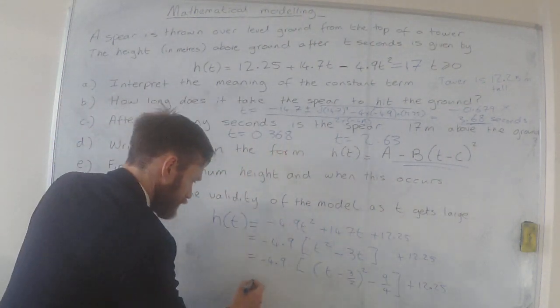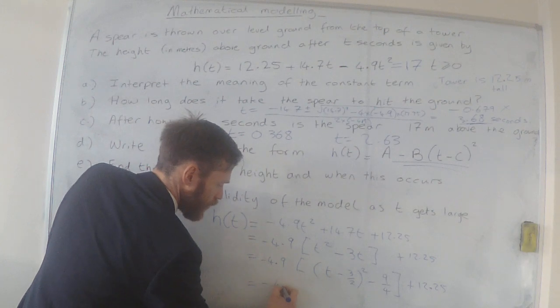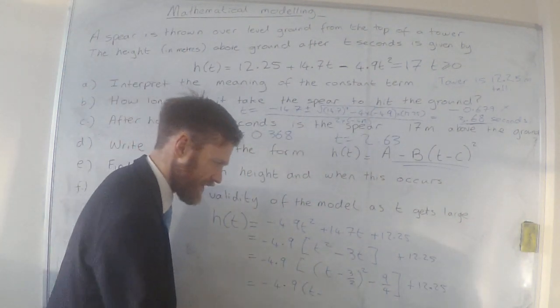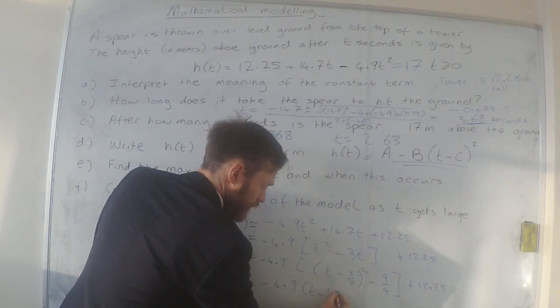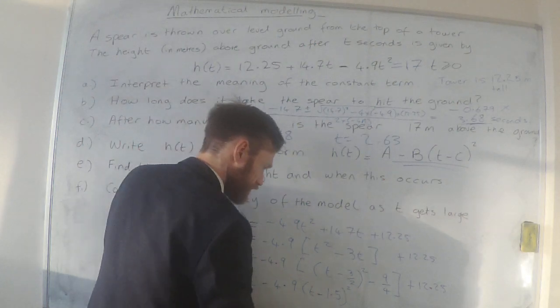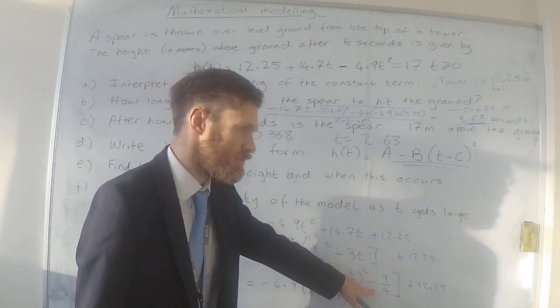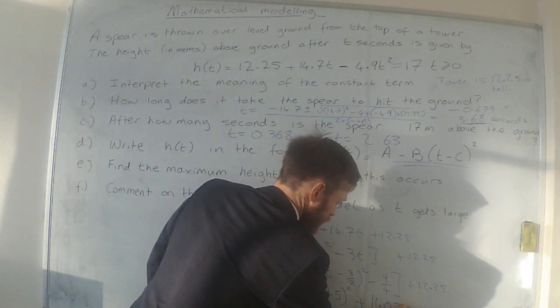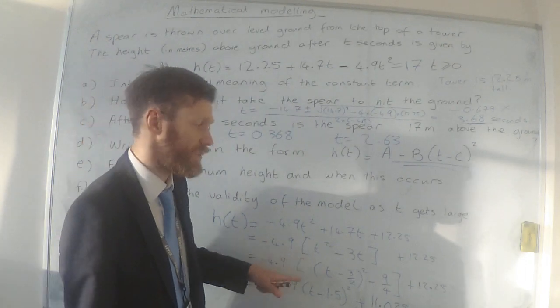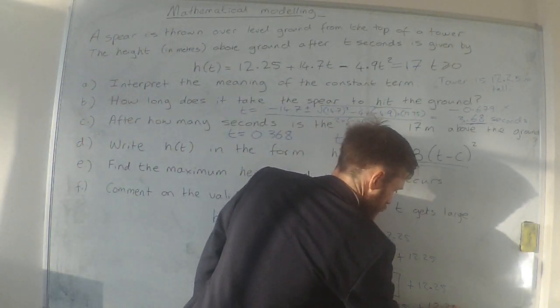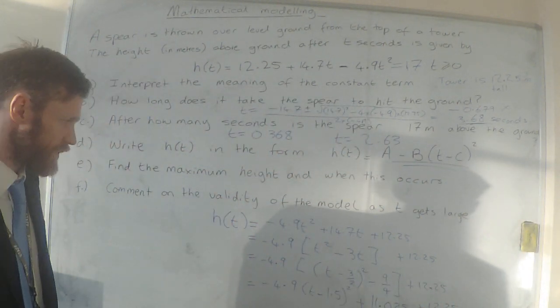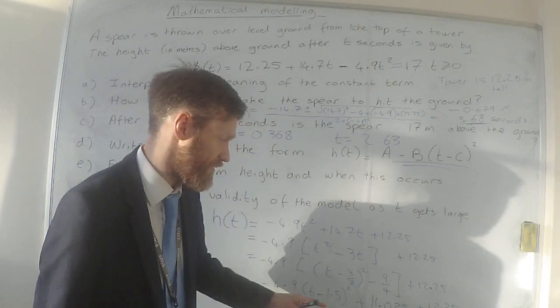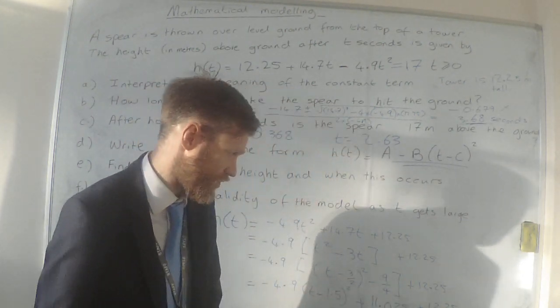If I multiply that back out, I will get -4.9 lots of (t - ... I'm actually going to turn these into decimals now, because the rest of the question is in decimals. Obviously, usually we use fractions when we're doing this, but in this question we'll use decimals. Then I've got the -4.9 × -9/4, so that's going to make it a plus, and that's going to give me 11.025, just multiplying those two numbers together. Do check all of these on your calculator as we're going through, plus the 12.25 on the end there. Then what I can do is I can collect up these like terms. So on the end here, the 11.025 + 12.25, if I add them together, that's going to give me 23.275.